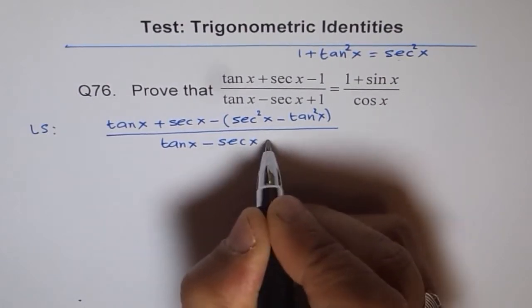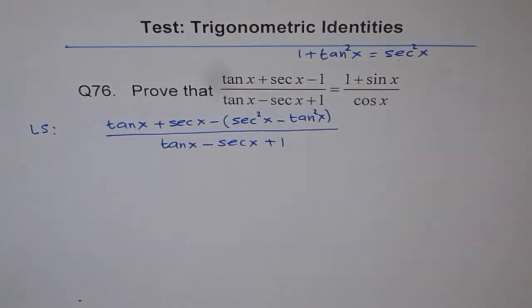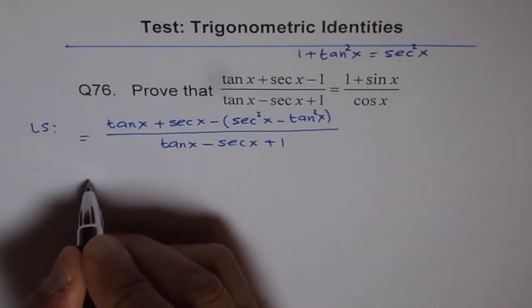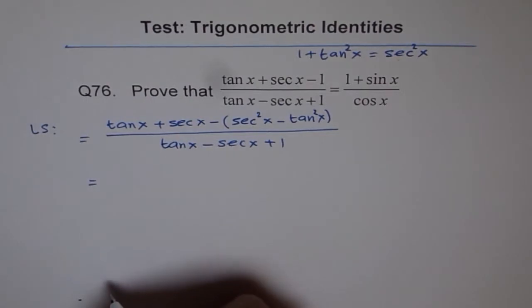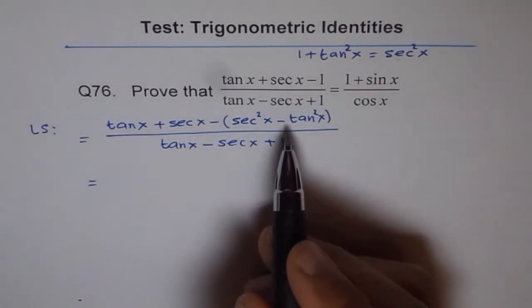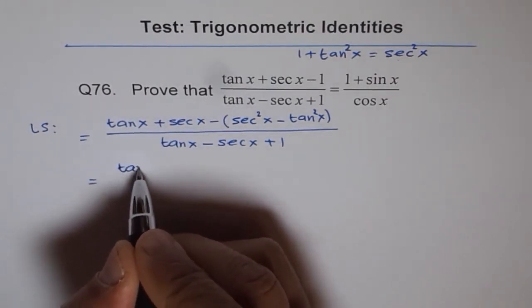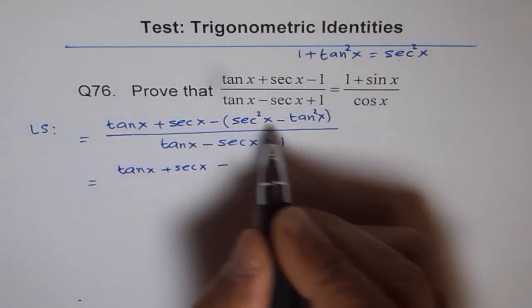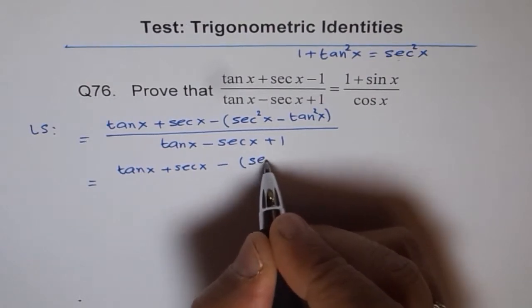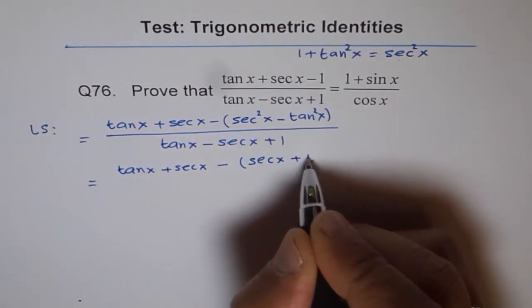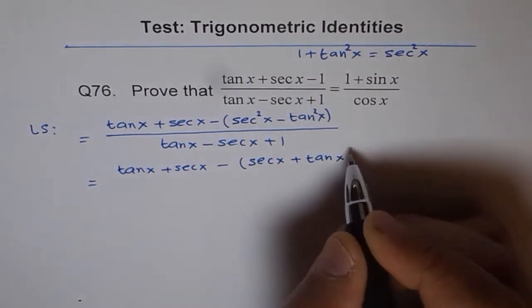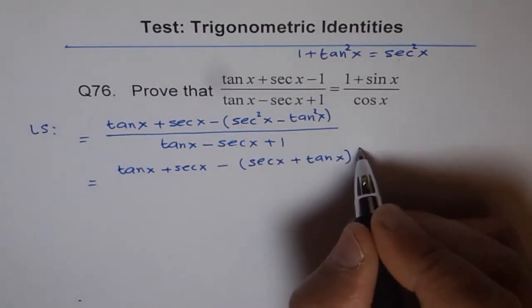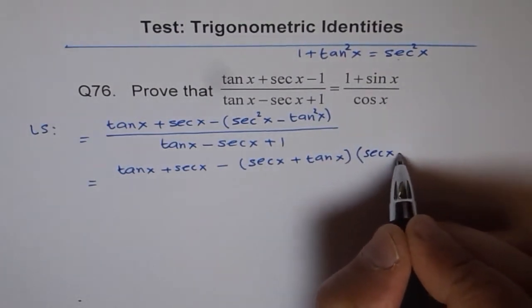Now we'll combine the terms in the numerator. This can be written as tan x + sec x minus—this is difference of squares—so I can write as (sec x + tan x)(sec x - tan x). The denominator is tan x - sec x + 1.